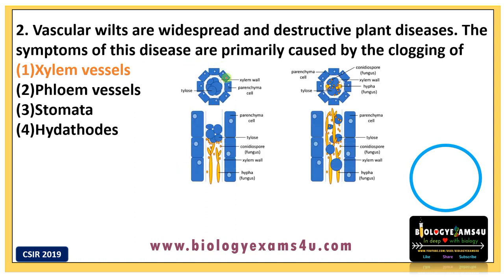You can see the tyloses — balloon-like outgrowths arising from the inner xylem wall. You can also see fungal hyphae clogging these vessels, preventing water movement and ultimately causing vascular wilt. That is why it is called vascular wilt.